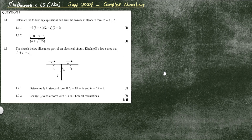For this lesson, the question is on complex numbers. In the description box I'll leave links for other recordings I've done for this supplementary 2024 question paper. Question 1 contains two sub-questions — 1.1 and 1.2 — with a total of 14 marks.